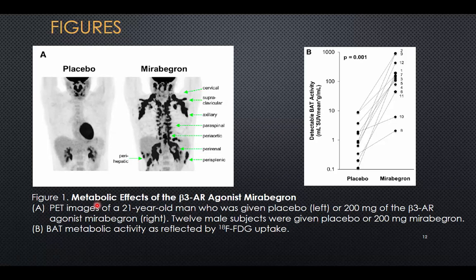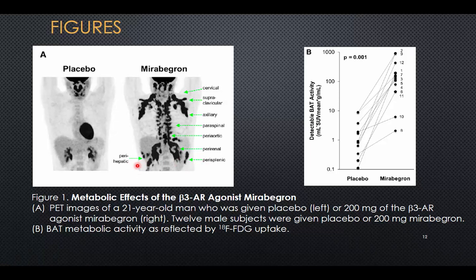Here are PET scans from young men tested with mirabegron, where dark areas represent areas with active metabolism. You can see some metabolism in the brain, heart, and liver. However, under the influence of the drug, you see that the subscapular fat has now become active, along with some areas along the spine and more activity in the liver. There's also activity described as perihepatic near the liver, perirenal near the kidneys, and perisplenic near the spleen.